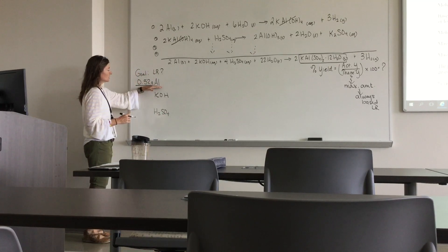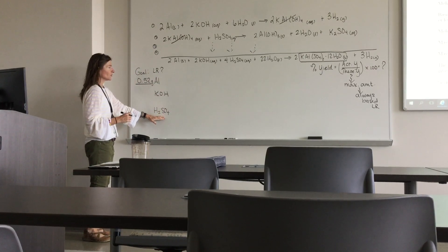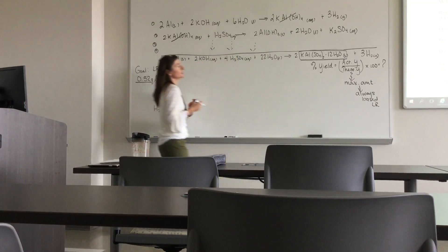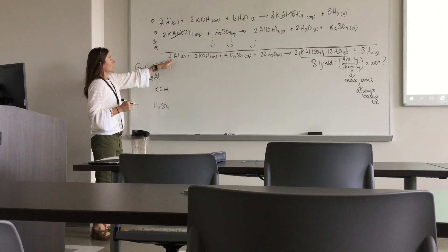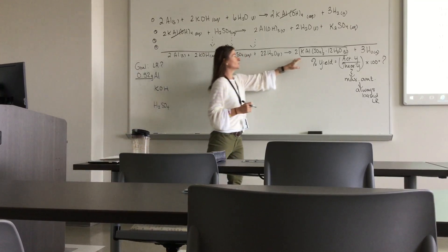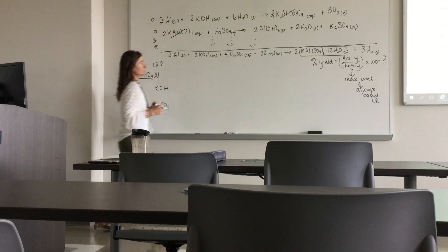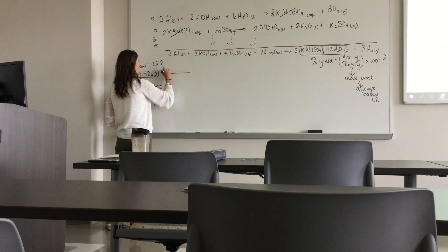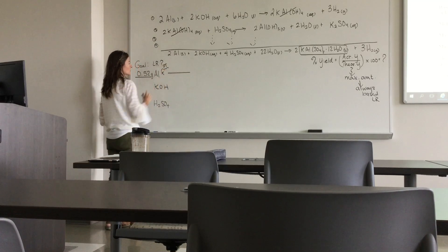So we've got to find the limiting reactant before we can find percent yield. In lab you massed out anywhere from 0.4 to 0.6 grams, so I'm just going to make up a mass. Let's say I start with 0.52 grams of aluminum. One way I approach it is: whichever one of these reactants limits the amount of product made, that's your limiting reactant.